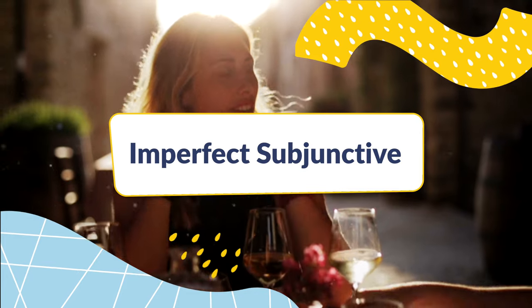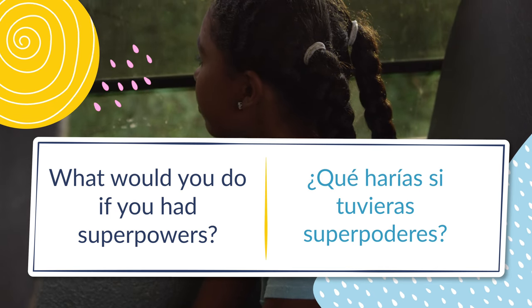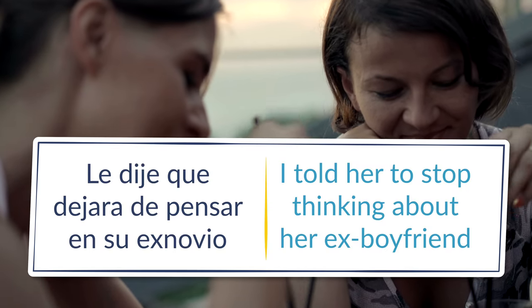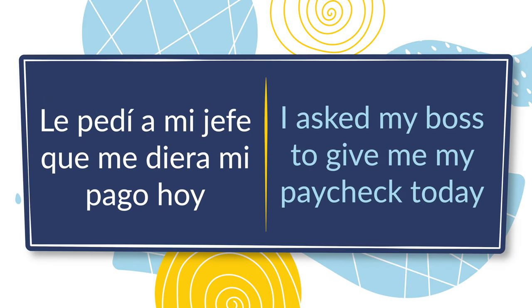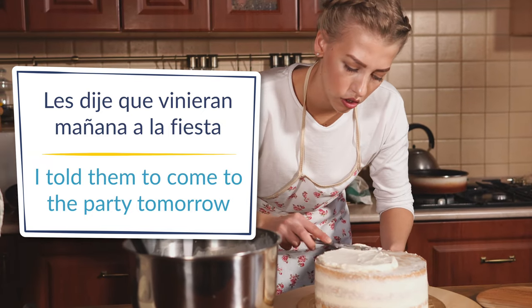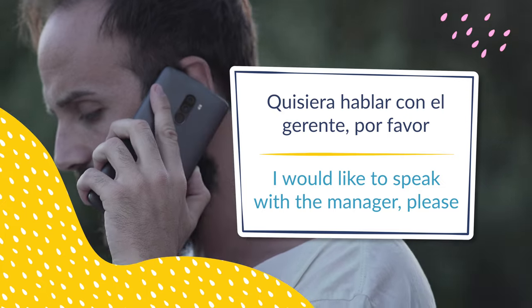Next, let's take a look at the imperfect subjunctive. The imperfect subjunctive mood is generally used to express courtesy, as well as feelings or situations that are certain. It can be both past and present. If you want to compare it with an English equivalent, it would be similar to how you express conditional 'if' sentences — most commonly tied to 'what if' questions. For example, 'What would you do if you had superpowers?' You can also use the imperfect subjunctive to talk about situations in different tenses: past — 'I told her to stop thinking about her ex-boyfriend'; present — 'I asked my boss to give me my paycheck today'; future — 'Les dije que vinieran mañana a la fiesta' — 'I told them to come to the party tomorrow'; and when talking about courtesy — 'Quisiera hablar con el gerente, por favor' — 'I would like to speak with the manager, please.'